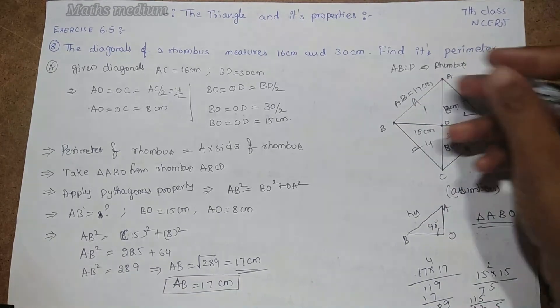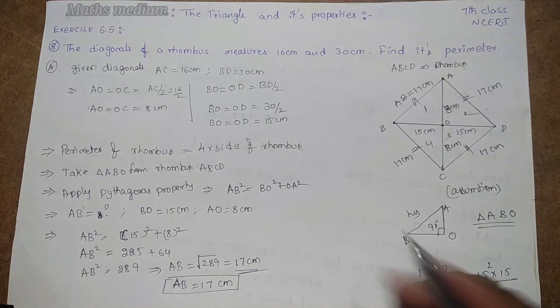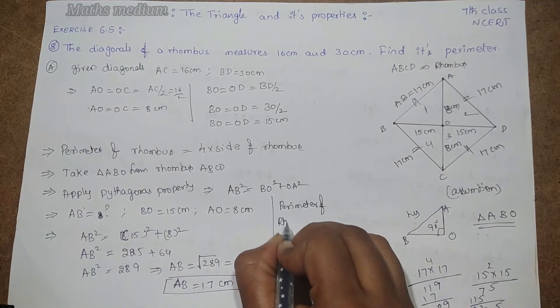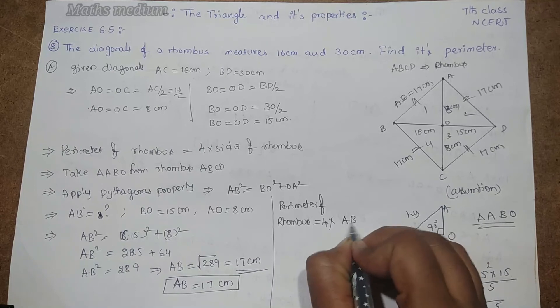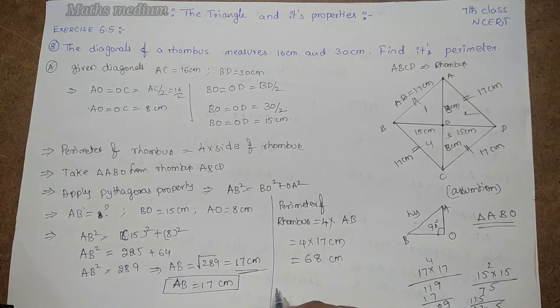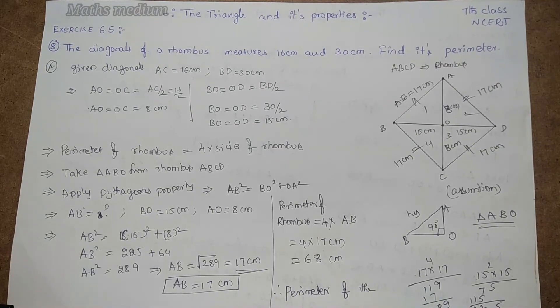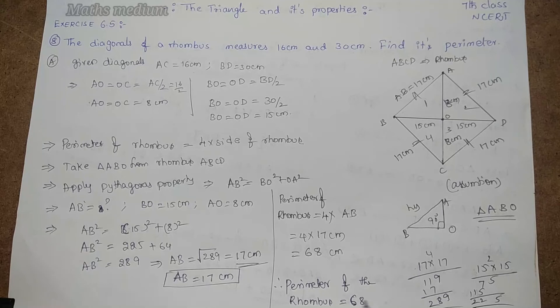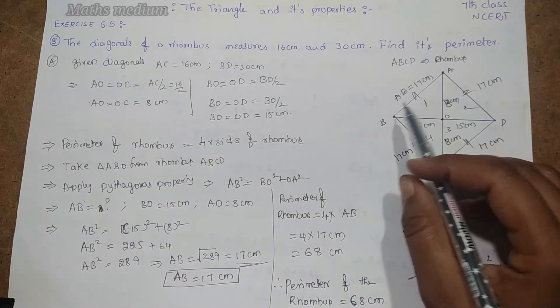We know that one side AB equals 17 cm. Similarly, all sides equal 17 cm. In a rhombus, all sides are equal in length. Perimeter of rhombus equals 4 into side, that is 4 into 17 cm equals 68 cm. Finally, the perimeter of the rhombus equals 68 cm.